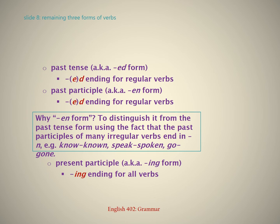Third: past tense, also known as the ED form — D or ED ending for regular verbs. Fourth: past participle, also known as the EN form — D or ED ending for regular verbs. The EN form label is used to distinguish it from the past tense form, using the fact that the past participles of many irregular verbs end in N.